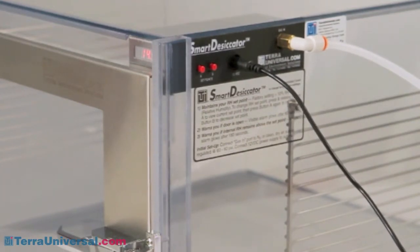As long as the measured relative humidity is above this level, the controller will direct nitrogen into the cabinet. When the setpoint is attained, the controller will shut off the flow to conserve nitrogen.